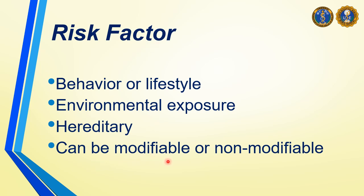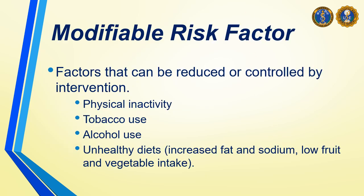Risk factors can be modifiable or non-modifiable. A modifiable risk factor is defined as a behavior or lifestyle risk factor that can be reduced or controlled by intervention, thereby reducing the probability of development of the disease. Examples of modifiable risk factors include physical inactivity, tobacco use or cigarette smoking, alcohol use, and unhealthy diets — which includes increased fat and sodium intake and low fruit and vegetable intake. These are risk factors that you can change and control.